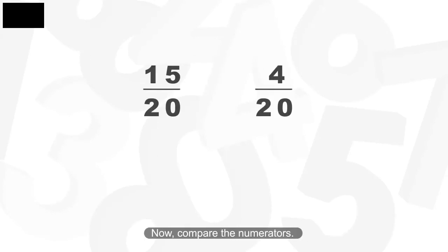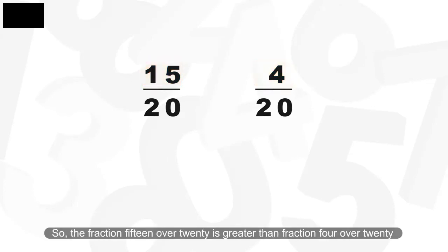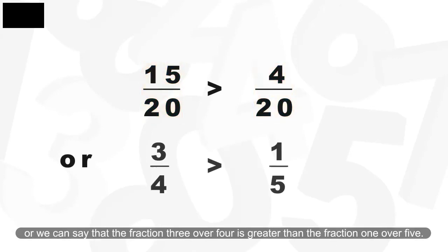Now compare the numerators. Since 15 is greater than 4, so the fraction 15 over 20 is greater than the fraction 4 over 20. Or we can say that the fraction 3 over 4 is greater than the fraction 1 over 5.